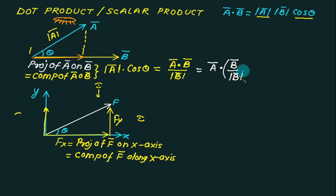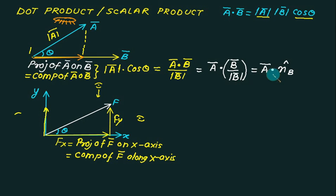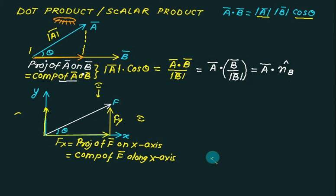We can write this as mod a dot b bar divided by magnitude of b — and a vector divided by its magnitude is a unit vector. So the projection equals a bar dot the unit vector along b. Whenever you find 'on b,' that becomes the unit vector along b.